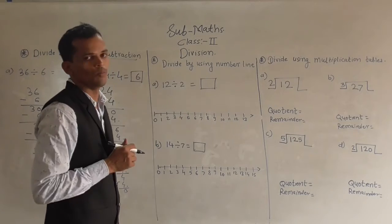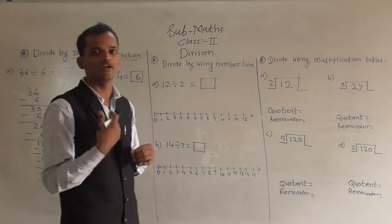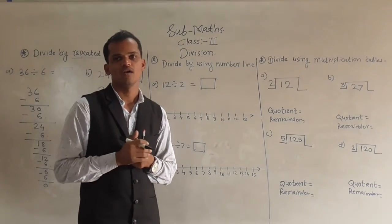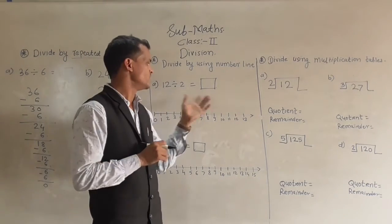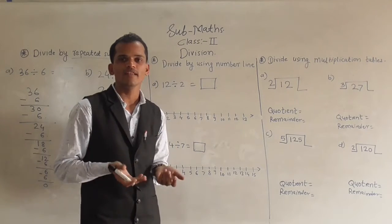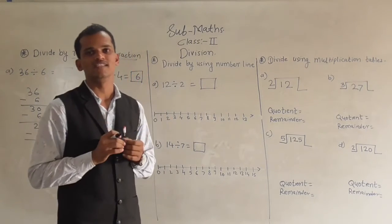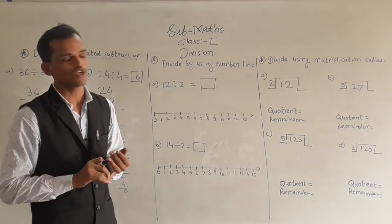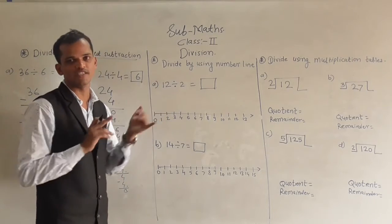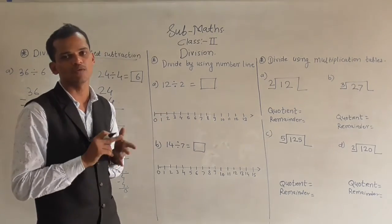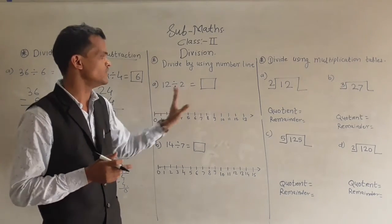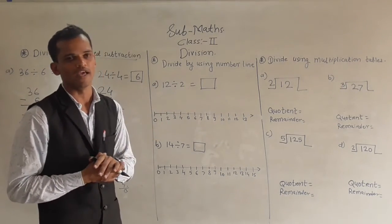Next example: divide using a number line. You can do any operation on the number line. A number line is a line having numbers. You can do addition, subtraction, multiplication, or division on the number line.